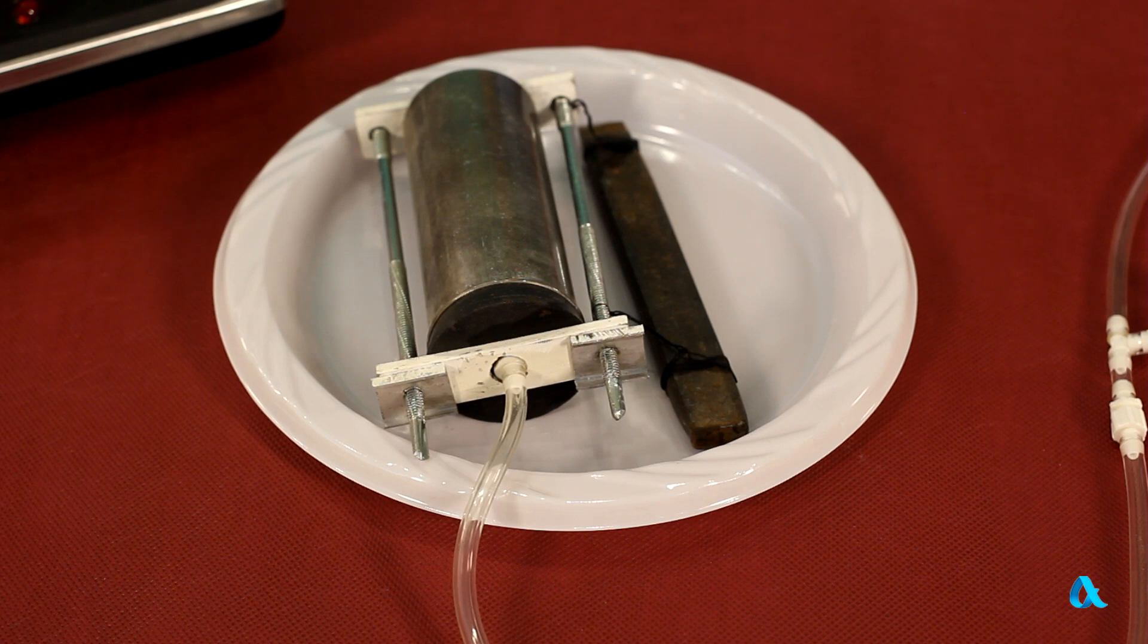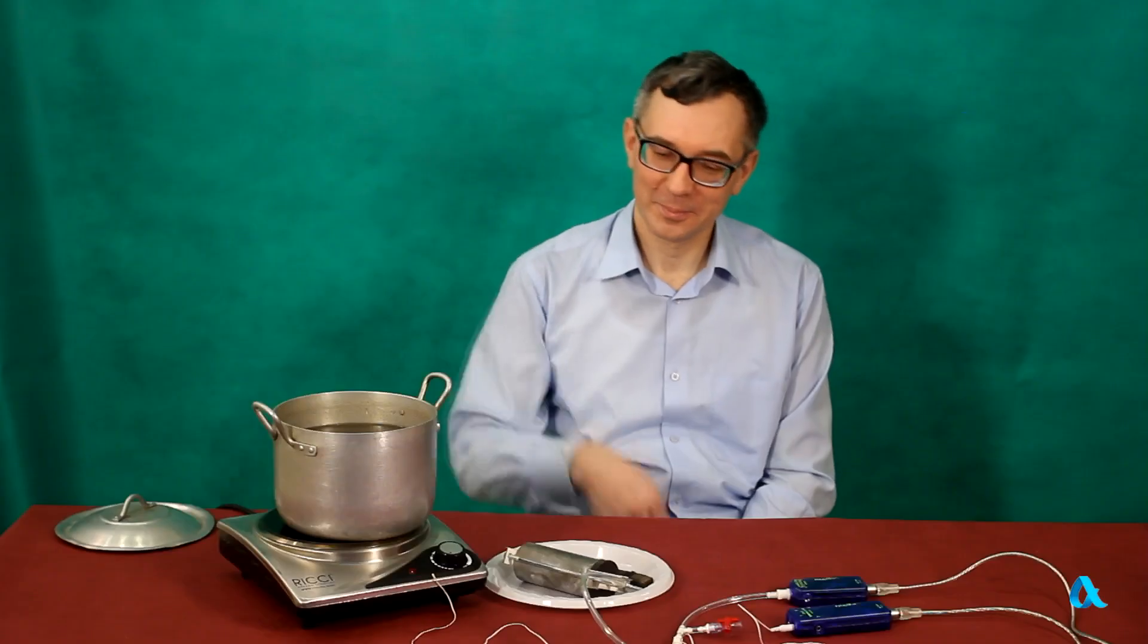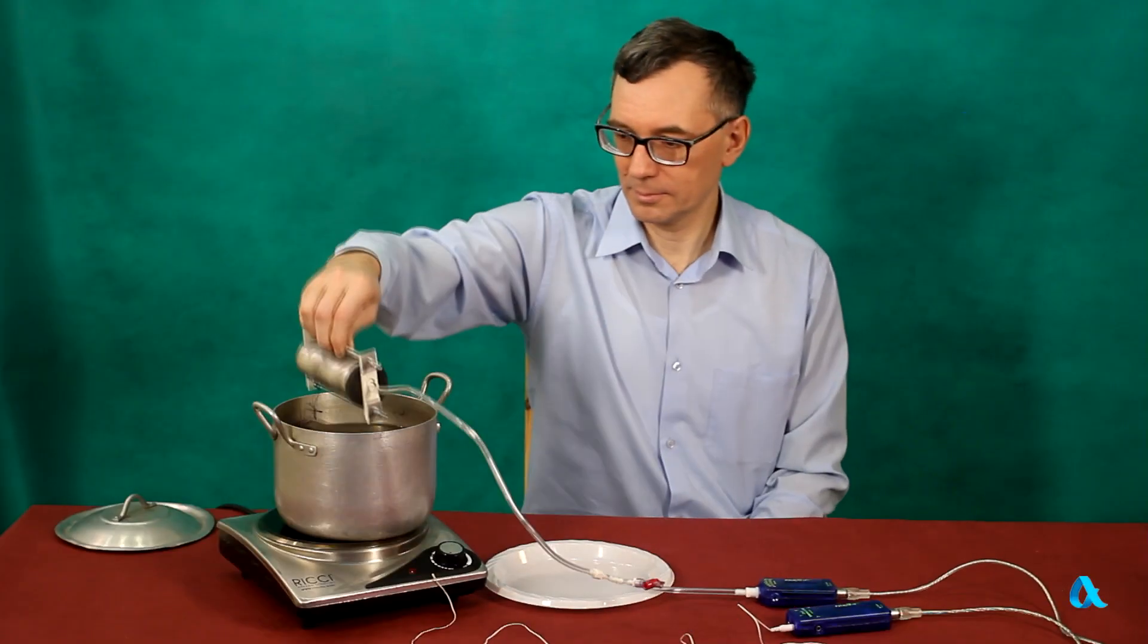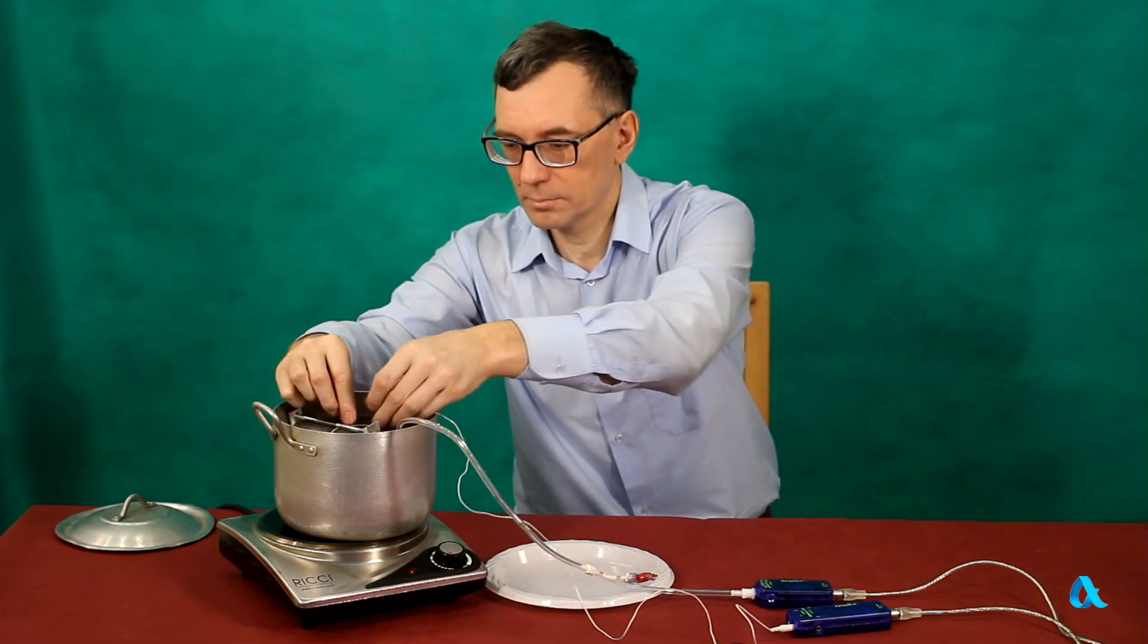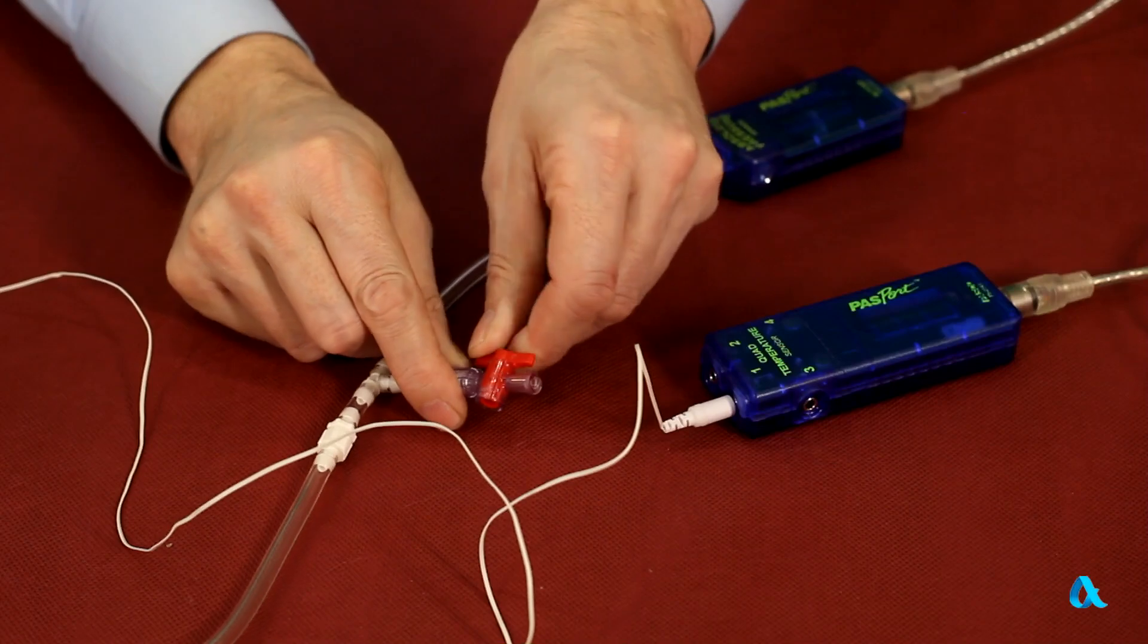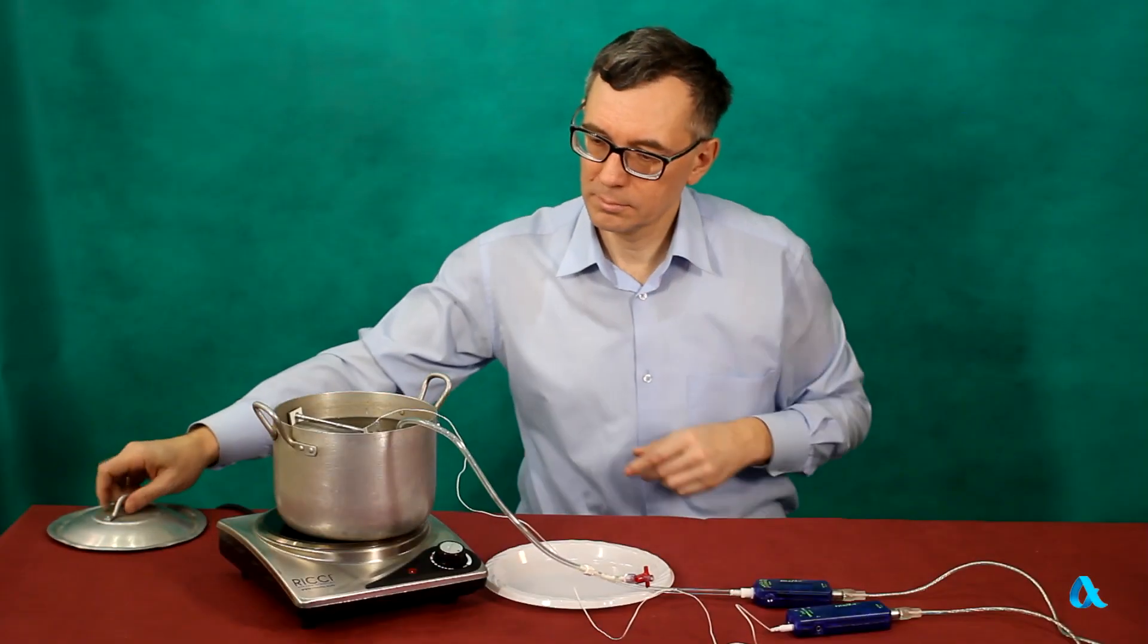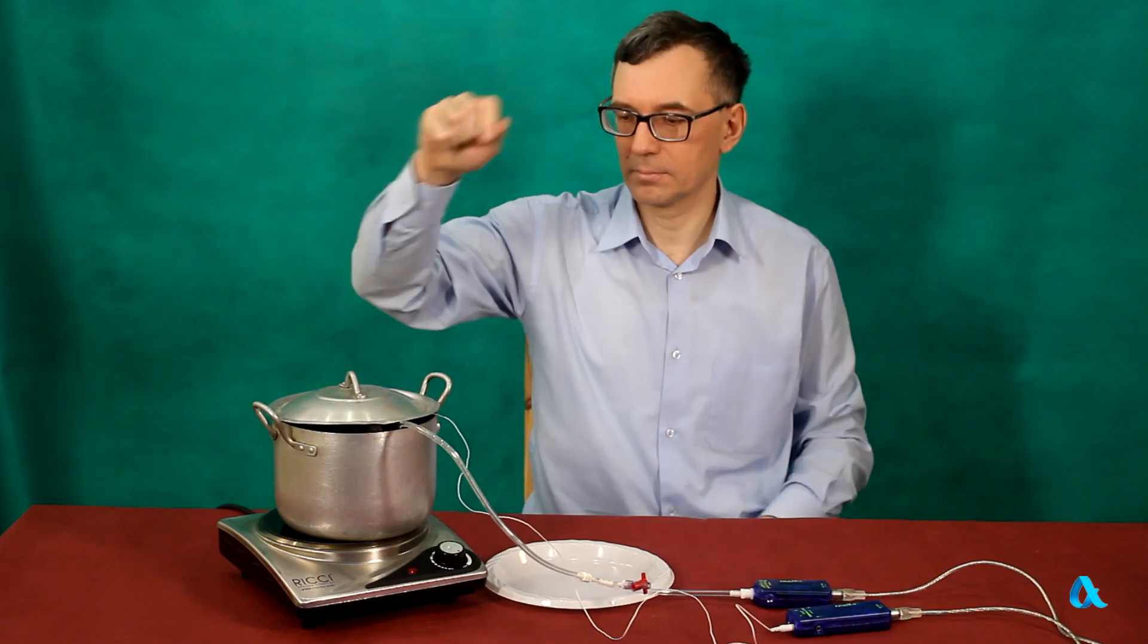The air within the vessel is in contact with the atmosphere, so its pressure equals the atmospheric one. The vessel is immersed in icy water in a pan and a temperature sensor is put there too. We shut off the valve and start heating the water. The air inside the vessel also gets heated.